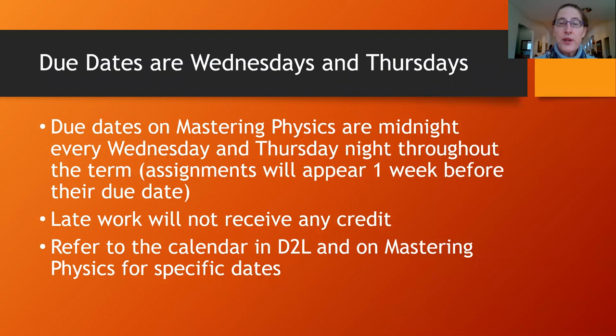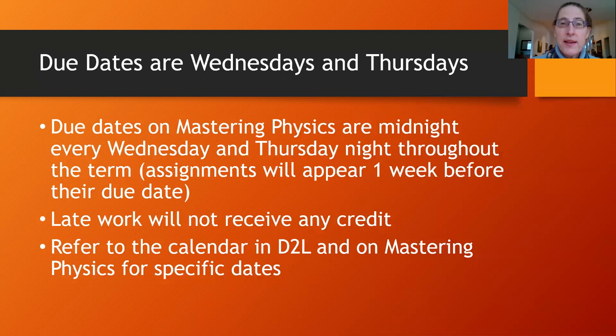You will have strict due dates. Wednesdays and Thursday nights are your physics due dates — midnight, every single week. The computer handles this due date, so if you do not get the work done, you simply get a zero. There's no overriding it. You have a week to do these assignments and they don't take long — the average time students spend is between one and two hours. All the due dates are clearly written both in Mastering Physics and in the calendar on D2L.